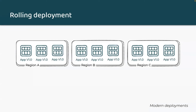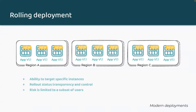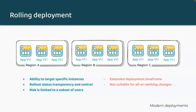The second deployment type is rolling deployment. It is a technique where an updated software is introduced by incrementally replacing the older application version on each of the multiple instances within their architecture. The pros are it lets you target specific instances according to region, IP address, and other types of traffic differentiators. Roll out status transparency and control, meaning it's easier to get a clearer picture of how successful the deployment is going because rolling deploys are so slow and the risk is limited to a subset of users. The cons are there is an extended deployment time frame and it is not suitable for all-or-nothing changes, which means either everybody sees a change or nobody sees a change.